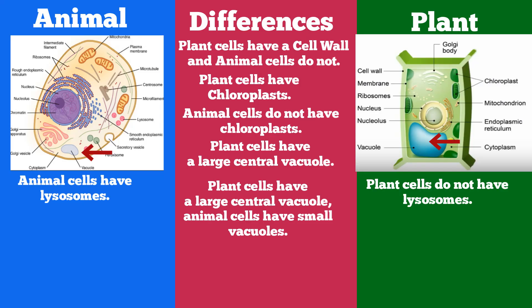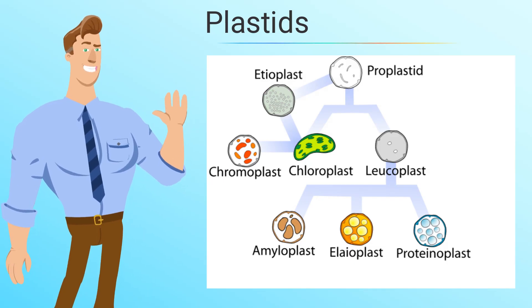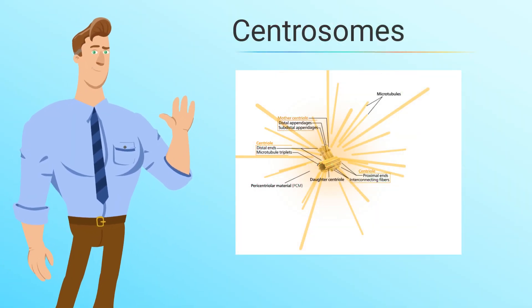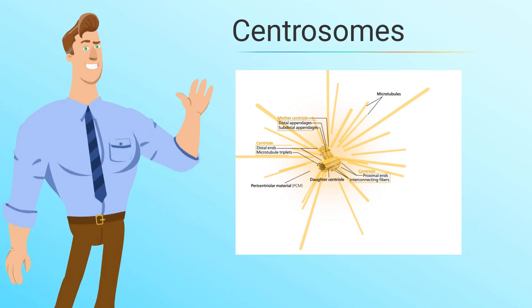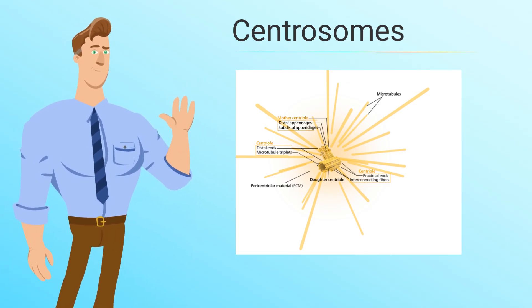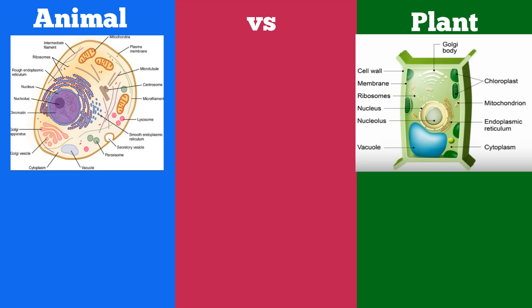Plant cells contain plastids and animals do not. The plastids of plants take several forms — the following is a picture of some of the different plastids found in a plant. Plants do not have centrosomes, but animals do. Centrosomes are the microtubule organizing and construction center, and they also help spindle fibers attach to the chromosomes during mitosis. Plant cells use another type of mechanism in order to attach to the chromosomes during mitosis. So there you go — some of the similarities and differences of plant and animal cells.